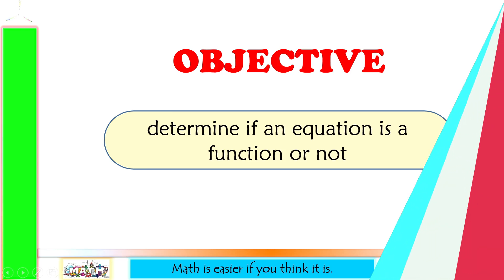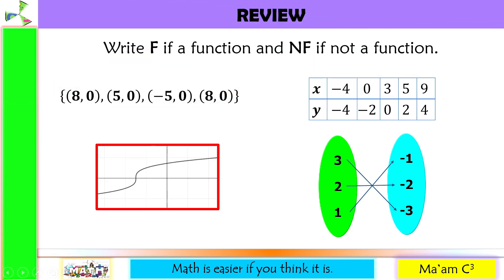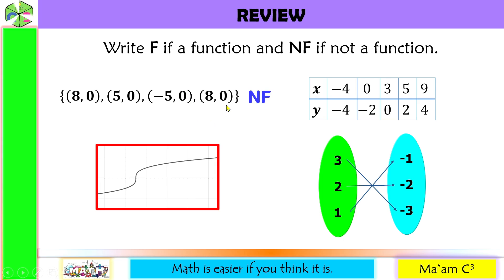Let's have a quick review of our previous lessons. Write F if a function and NF if not a function. This is a set of ordered pairs and this is NF, not a function. Why? It is because the x values have been repeated. Remember that for a set of ordered pairs to be a function, the x values should not be repeated.